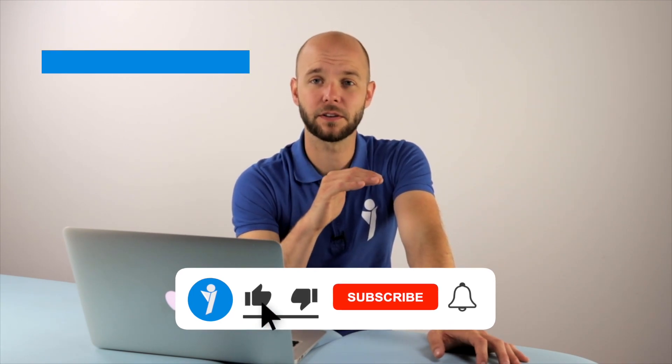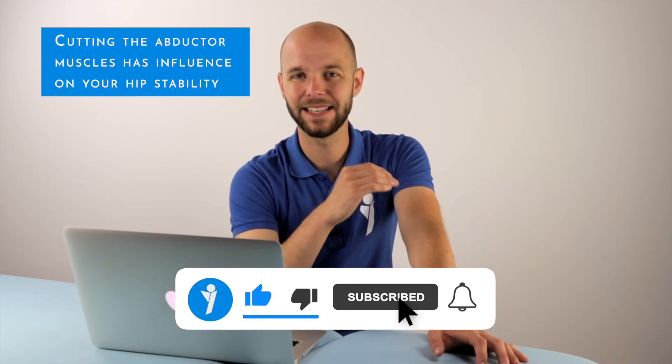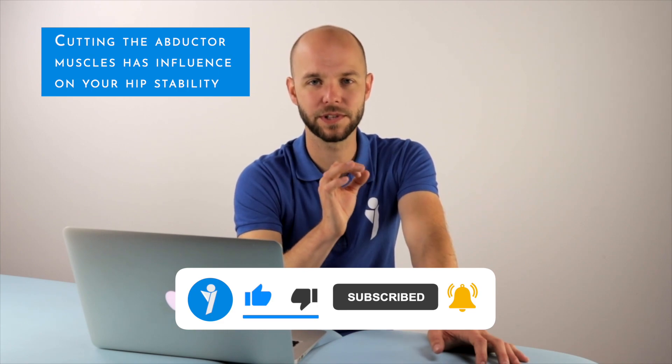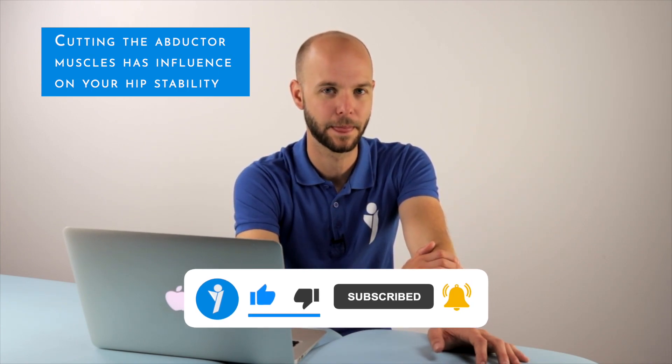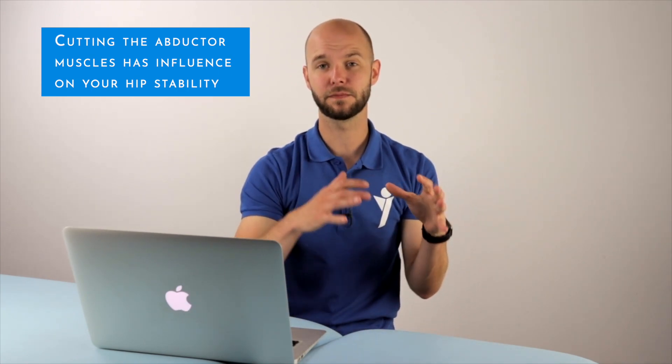The lateral approach is done by an incision on the lateral side of the hip. And with this procedure, they need to cut through your abductor muscles of the hip. And these hip abductors are the most important stabilizers of your hip. So they keep your pelvis more stable and cause you to walk straight without a limp. So a longer recovery is probably necessary.